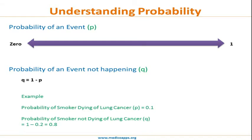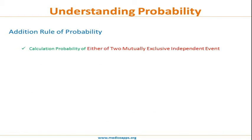There are two rules of probability: the addition rule and the multiplication rule. The addition rule applies when you calculate the probability of either of two mutually exclusive, independent events. The key word is 'either' — either this or that. Mutually exclusive independent events are those that do not overlap, and the happening of one event does not affect the happening of the other.